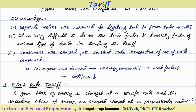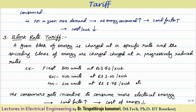Another limitation is that consumers are charged at a constant rate irrespective of the number of units consumed. That means for a power load, we are telling it is only 3.20 per kilowatt-hour whether he uses one hour or 10 hours — we are charging at the same rate. Then why would the consumer use it continuously for more time? Some incentive should be given to encourage operating for more time. That is not provided in this tariff. For a given maximum demand, as the energy consumed increases, automatically load factor increases, so cost per kilowatt-hour decreases.